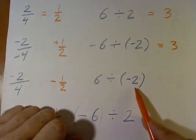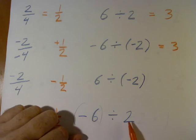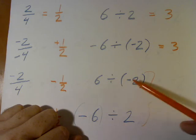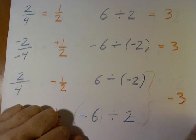Remember, 6 divided by negative 2. Negative 6 divided by 2. Each of these have one negative and one positive. That means we get negative 3.